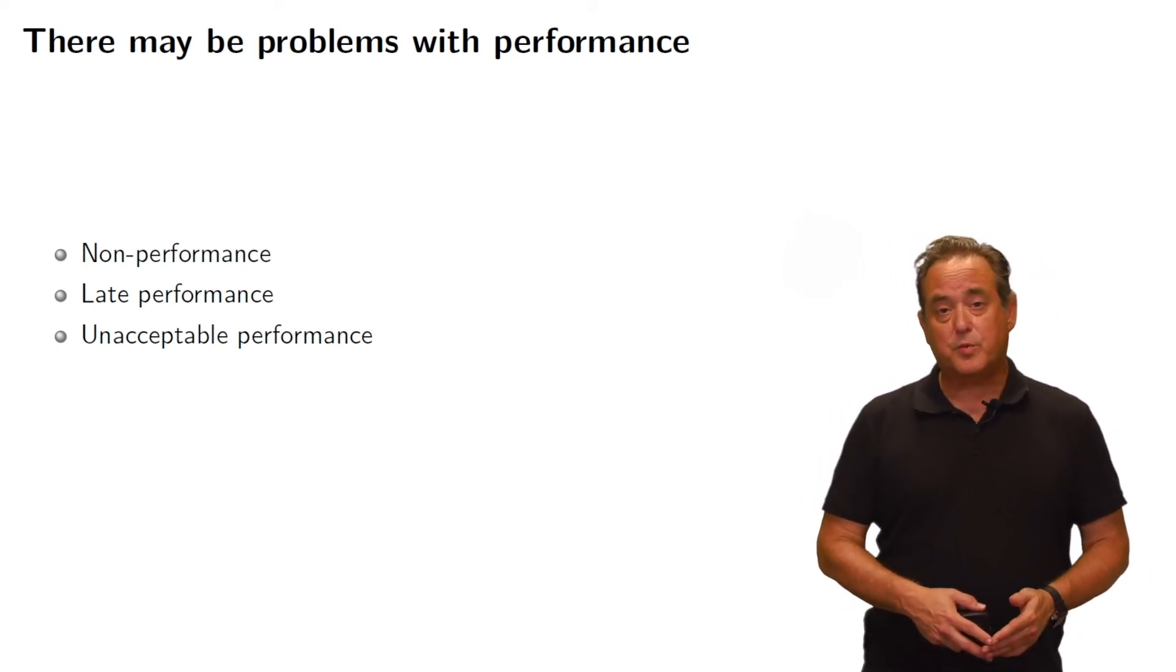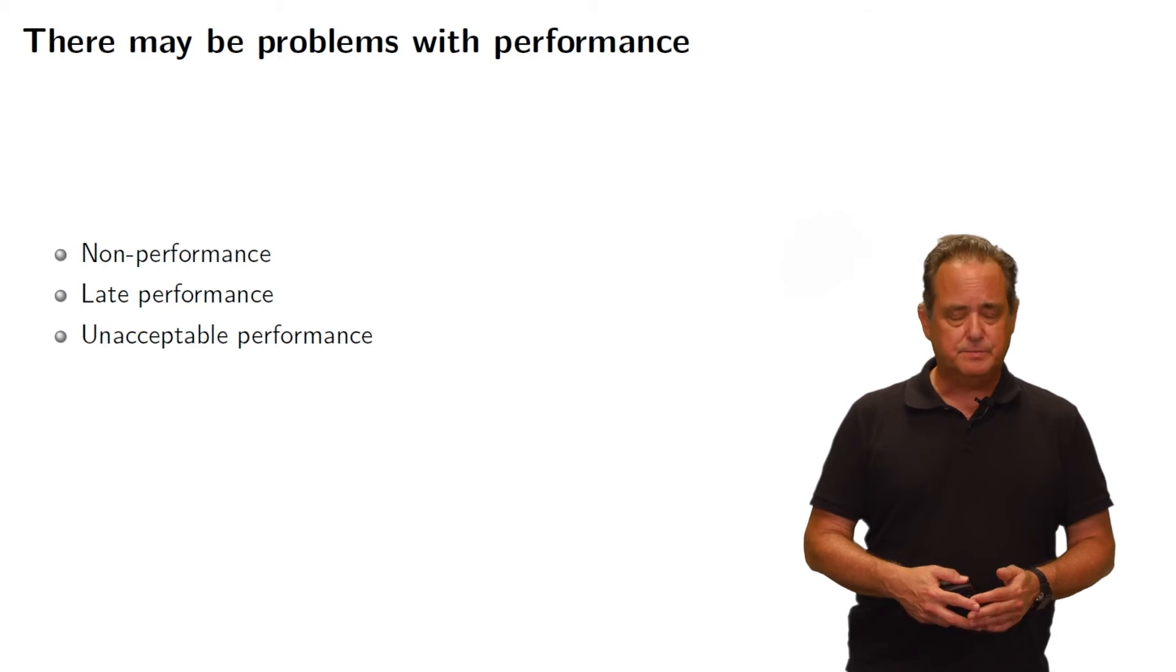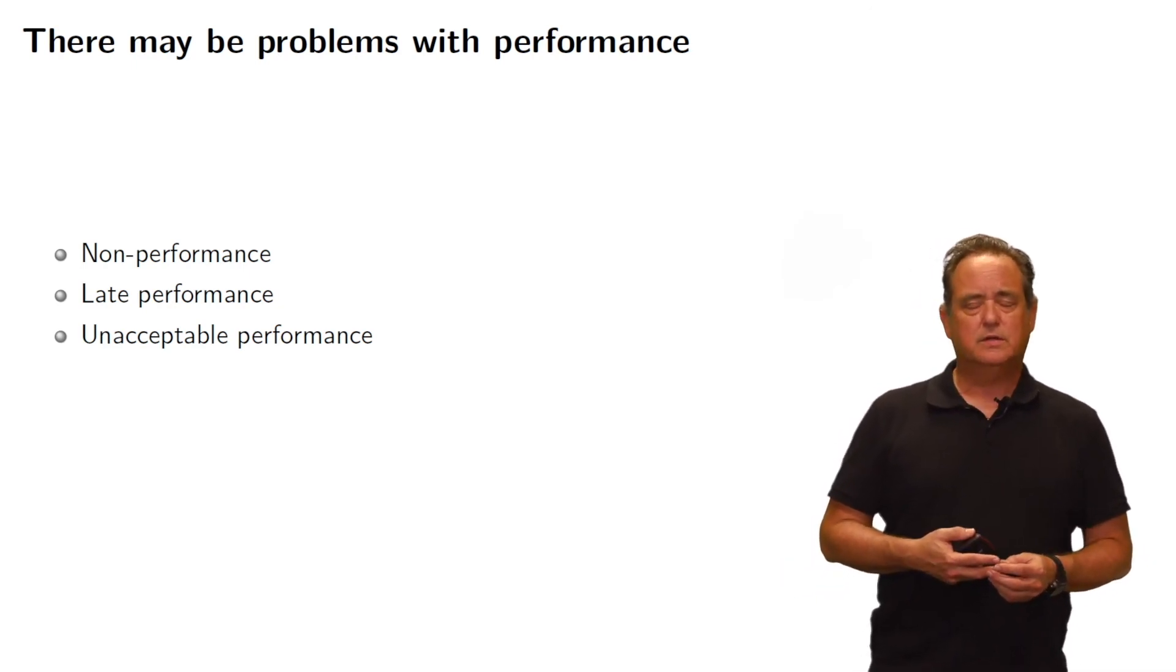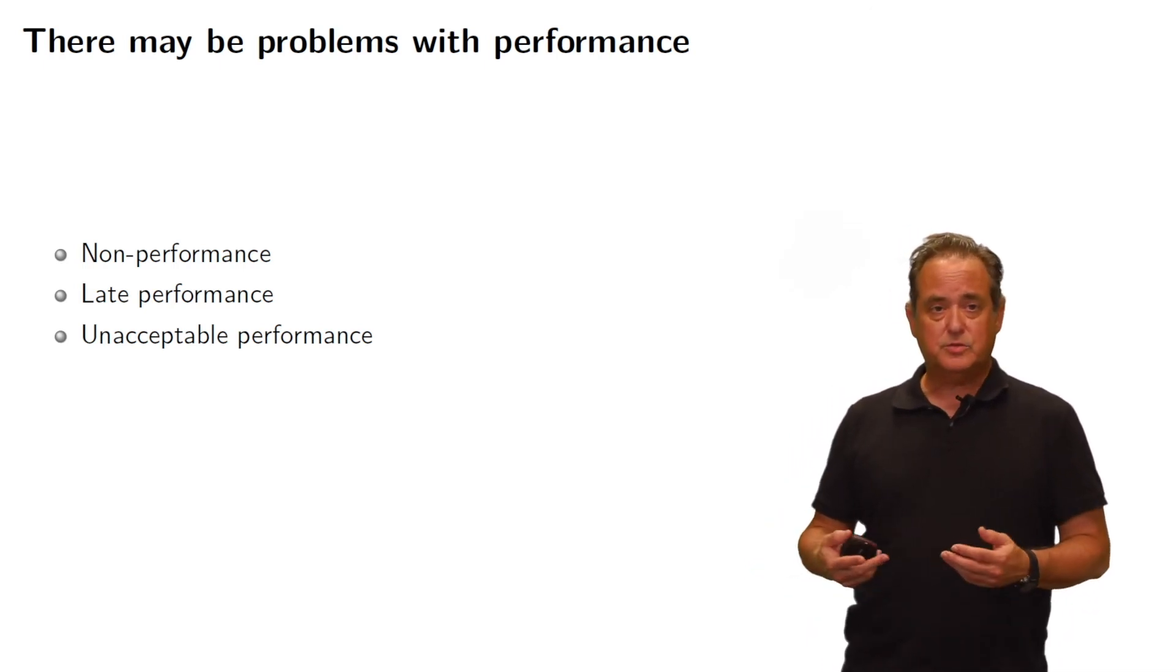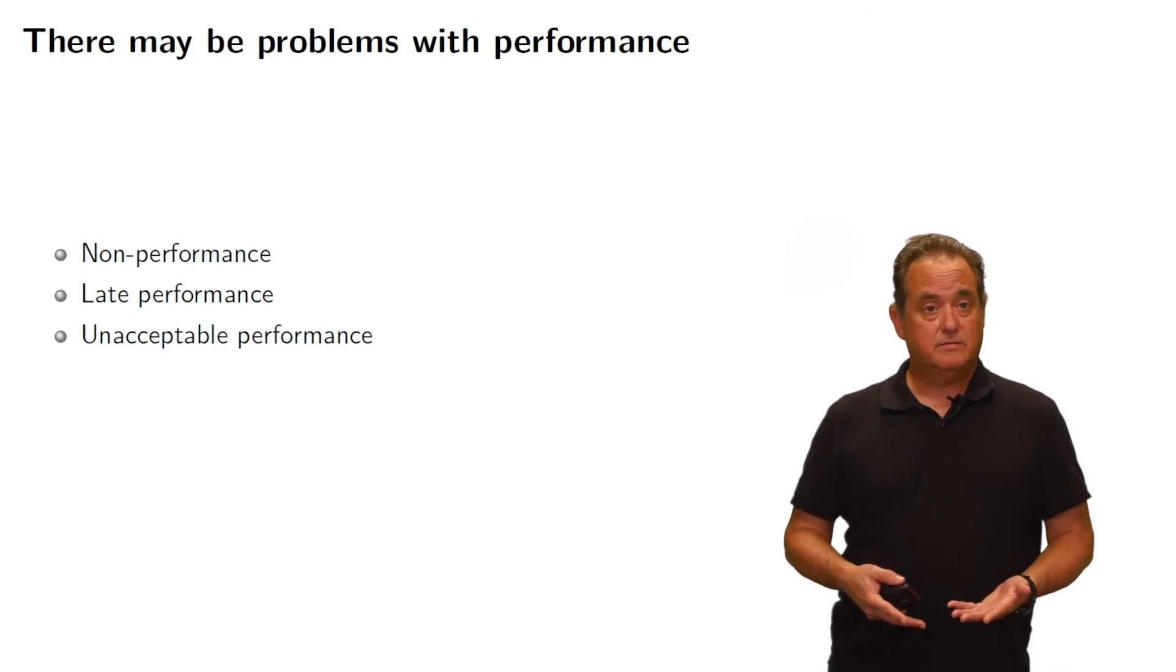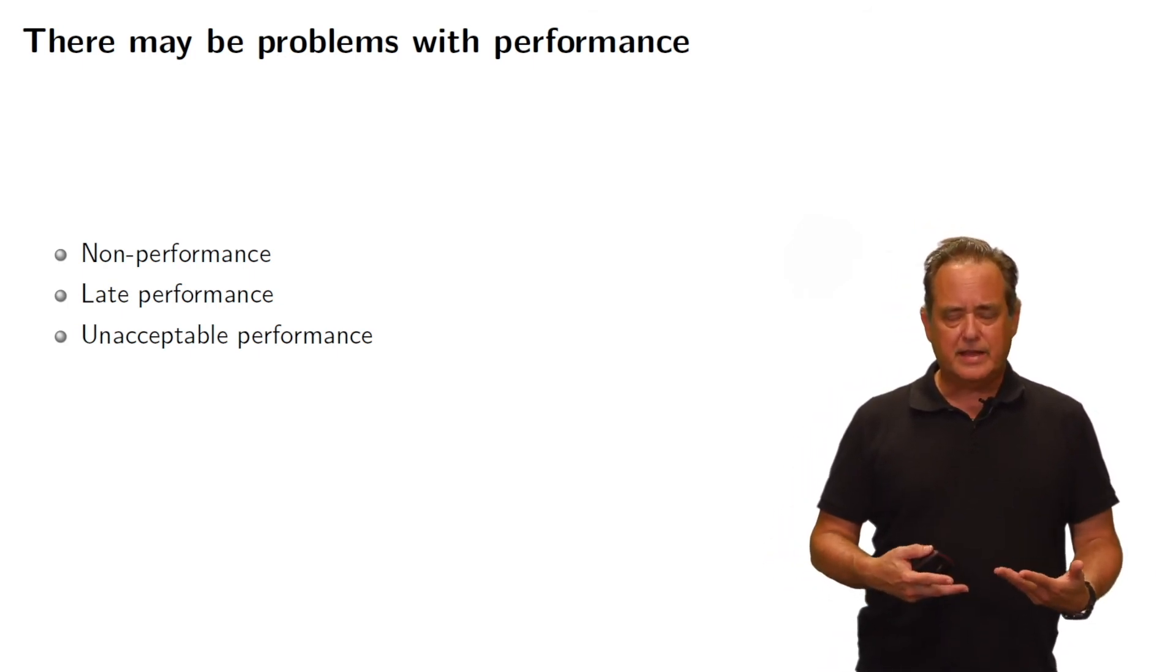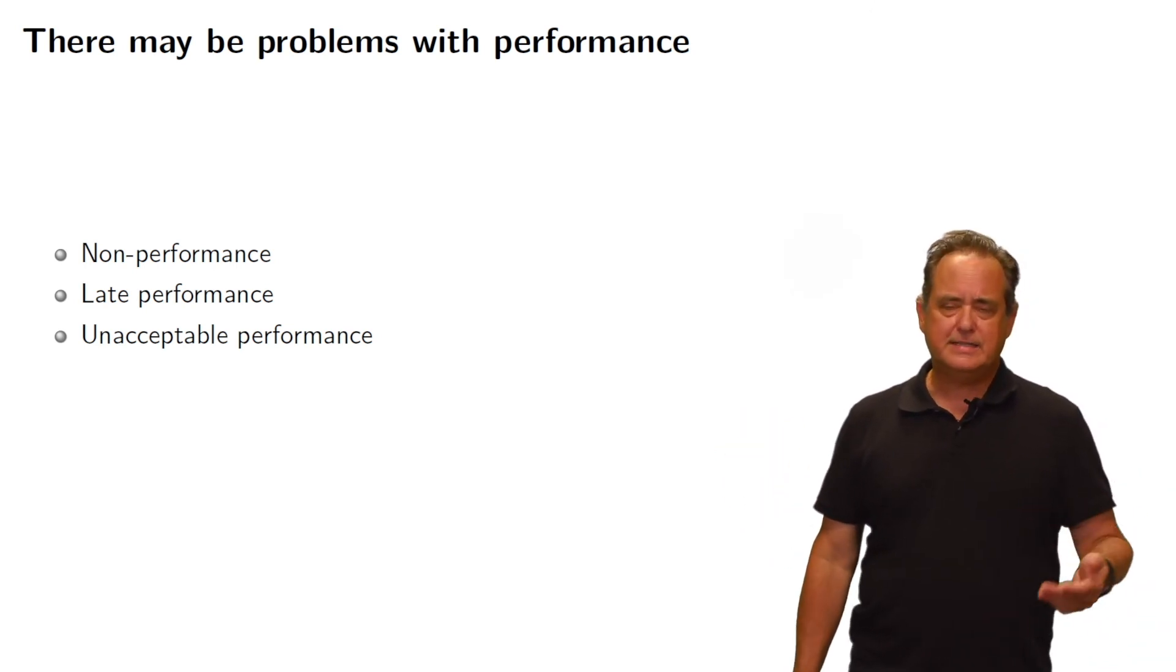Unacceptable performance is another problem having to do with performance. If, for instance, the seller ships, and it turns out that the goods that you receive are not the goods that you bargained for. If I ordered Halloween costumes, and the Halloween costumes were supposed to be flame retardant, and I get the costumes, and they don't meet the applicable safety standard, well, it doesn't help that they came in early or they came in on time, because now I've got to ship them back and start over. So unacceptable performance.